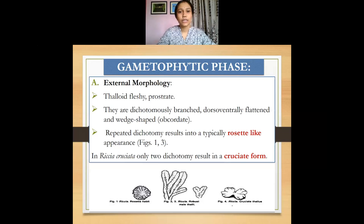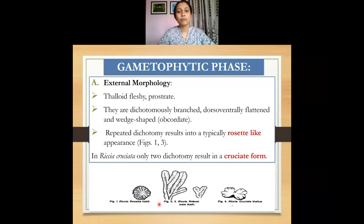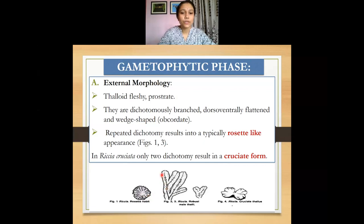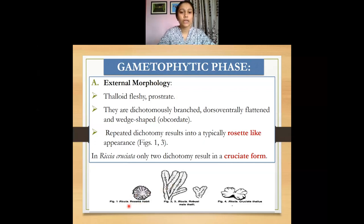Now let us discuss the gametophytic phase or the external morphology of the plant body of Riccia. As you can see in the diagram figures 1, 2, 3, and 4, Riccia appears different in external morphology, but in most cases the plant body is thaloid — not leafy — it is fleshy, prostrate, dorsiventrally flattened, and shows a wedge-shaped structure due to dichotomous branching. As a result, one form is called the rosette habit.